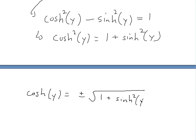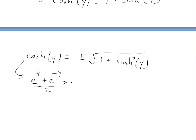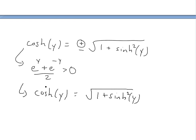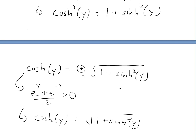We have a plus or minus, but recall the definition of hyperbolic cosine: it equals (e to the y plus e to the negative y) over 2, which is always greater than 0. Since it can never be negative, the minus sign doesn't apply, so we only use the positive root. Therefore, hyperbolic cosine of y equals the square root of 1 plus hyperbolic sine squared of y.